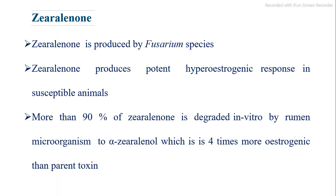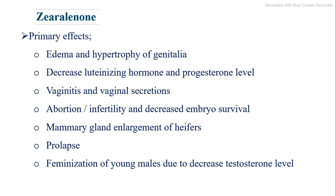Zearalenone is produced by Fusarium species and produces a potent hyperestrogenic response in susceptible animals. More than 90% of zearalenone is degraded in vitro by rumen microorganisms to alpha-zearalenol, which is four times more estrogenic than the parent toxin. Primary effects include edema and hypertrophy of genitalia, decreased luteinizing hormone and progesterone levels, vaginitis, abortion/infertility, decreased embryo survival, mammary gland enlargement in heifers, prolapse, and feminization of young males due to decreased testosterone levels.